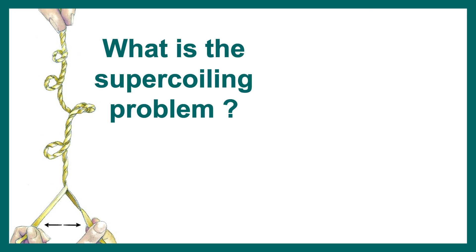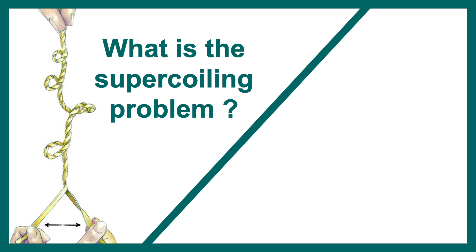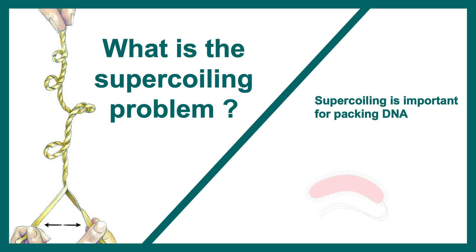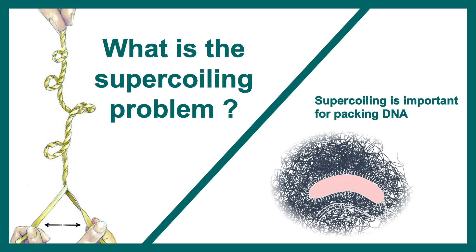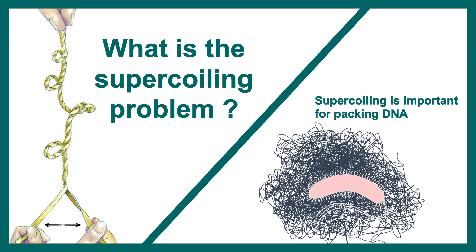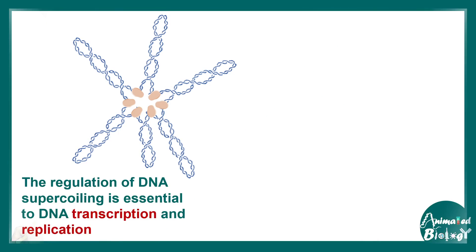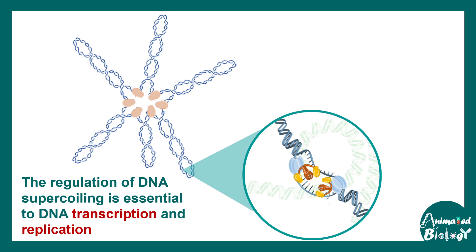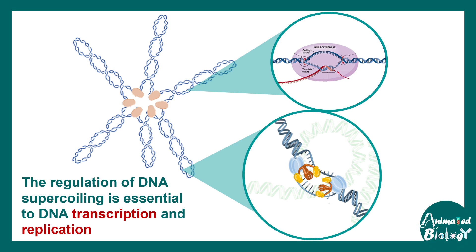This is the supercoiling problem actually faced by E. coli, which has a huge amount of DNA. In order to pack it properly within a small volume it has to supercoil the DNA, which is essential for E. coli. There are specific enzymes which can unwind the DNA during processes like transcription and replication, and that is super important for these biological processes to occur.